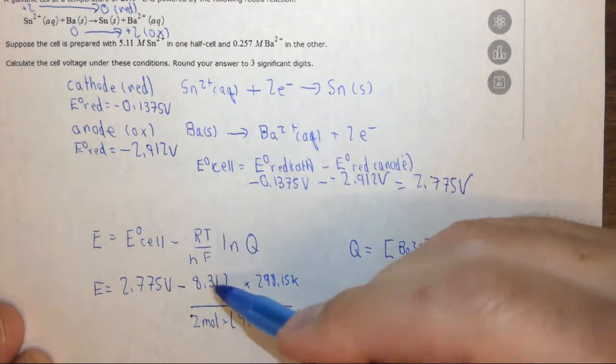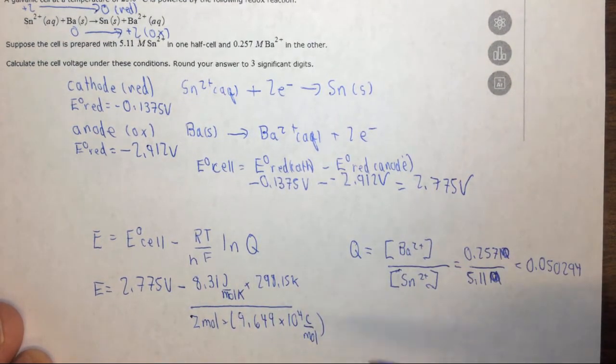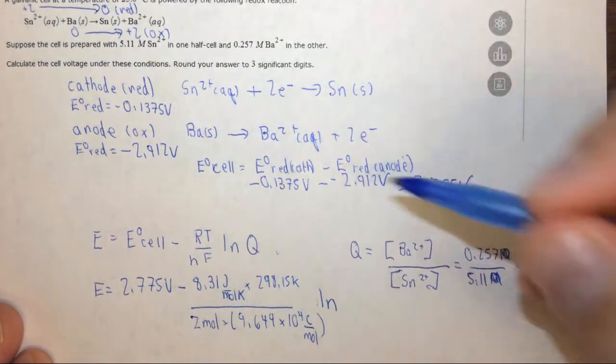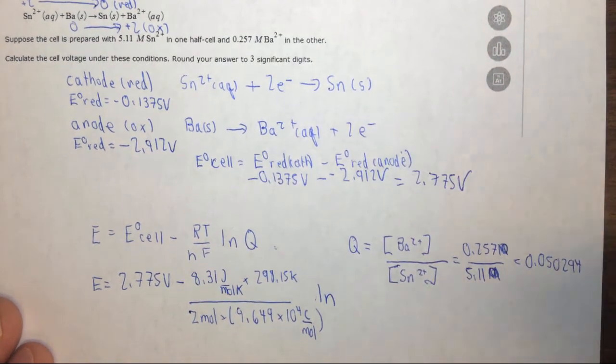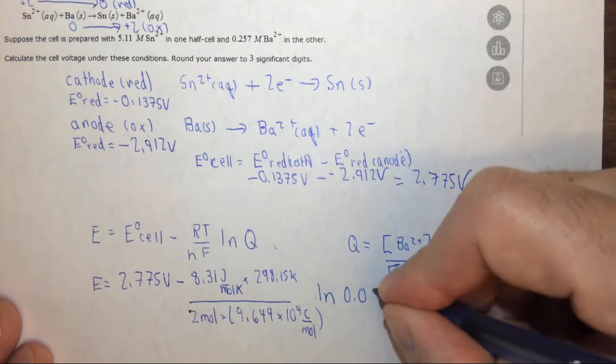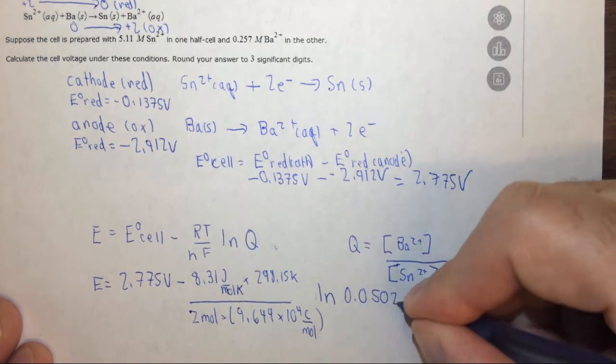When you do all of this out, you're essentially going to get joules per Coulomb, which is equal to a volt. Then we want to do ln of Q, where Q we found over here is 0.050294.